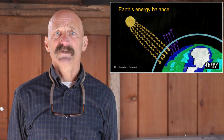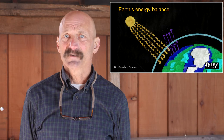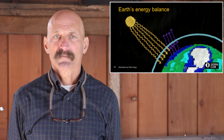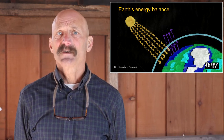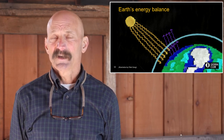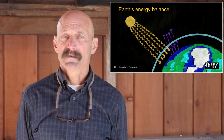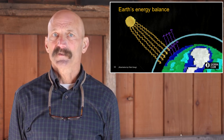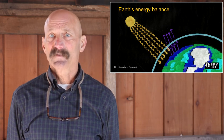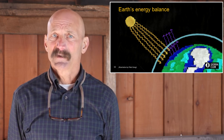The climate crisis results from a change in the Earth's energy balance — an imbalance between incoming energy from the Sun and outgoing energy from the Earth. Energy from the Sun drives the Earth's climate system. Some incoming solar energy is absorbed by the atmosphere and some is bounced back into space by clouds or by light surfaces like snow and ice. The rest is absorbed by the Earth, which then emits heat in the form of terrestrial radiation, some of which is trapped by greenhouse gases or bounced back by clouds, and the rest of which escapes into space.